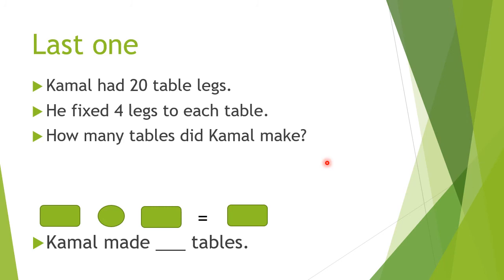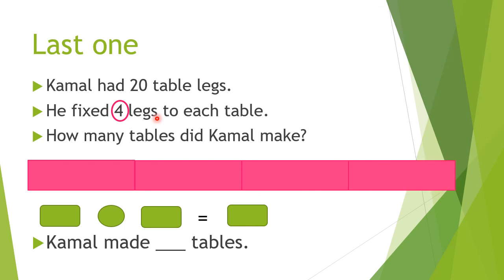This is the last one. Can you try? Kamal had 20 table legs. He fixed 4 legs to each table. How many tables did Kamal make? You try first. We choose the smaller number first. Here we have 20 and 4. So the smaller number is 4. So we draw 4 boxes: 1, 2, 3, 4.